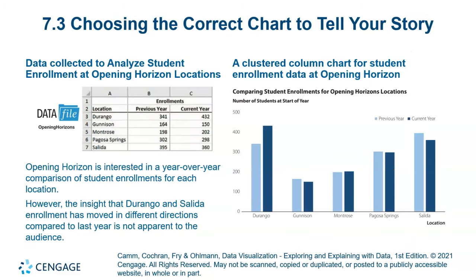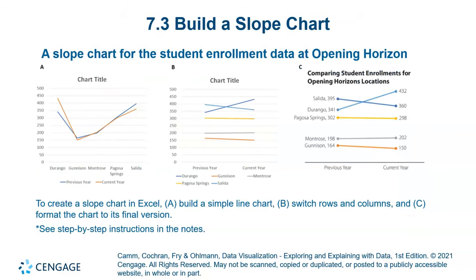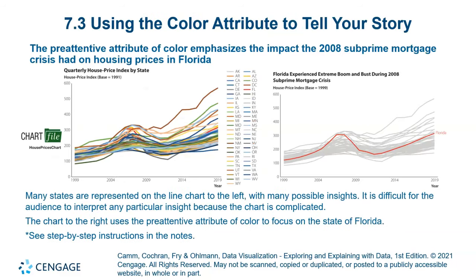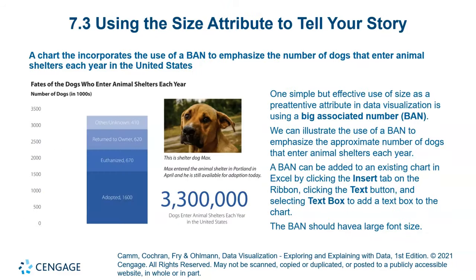Choosing the correct chart to tell your story is very important. If the correct chart is not chosen, the story will not be built properly. We already discussed the slope chart in the makeover study. When using a multi-line chart, it is better to highlight the most important line rather than coloring all lines. Using the size attribute to tell your story is also effective. Big Associated Numbers (BAN) — large numbers paired with context — have more impact on the story.